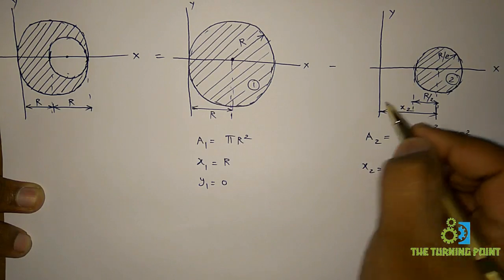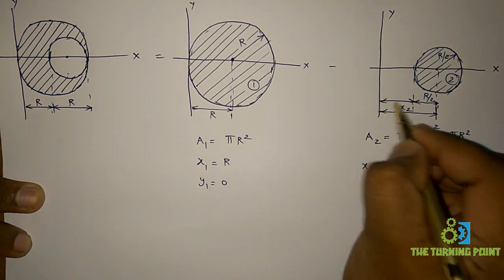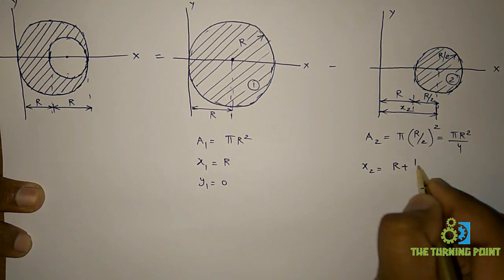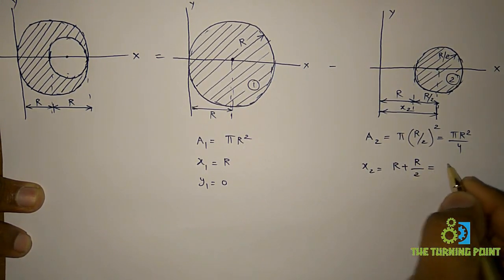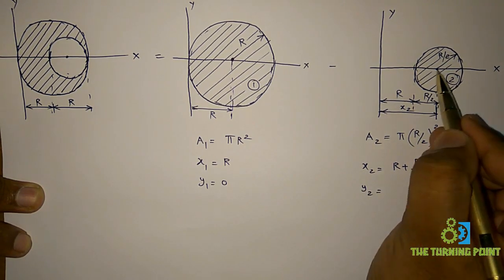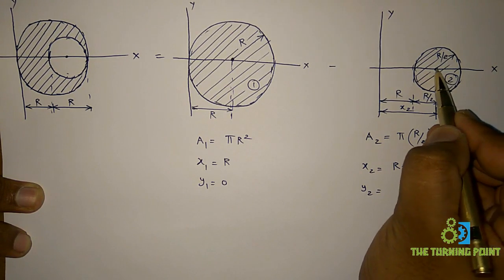This is x2. So we know that this is r. So then x2 will become r plus r by 2. So that is 3r divided by 2. And y2, from this point to x-axis distance, again 0.